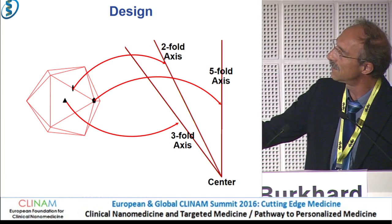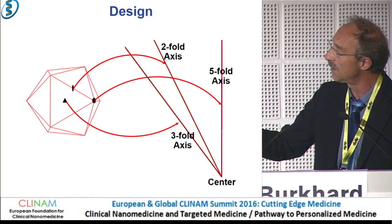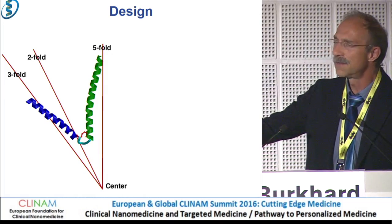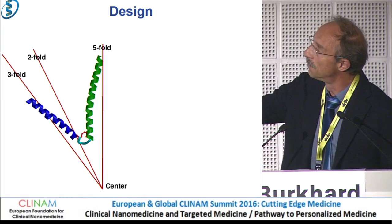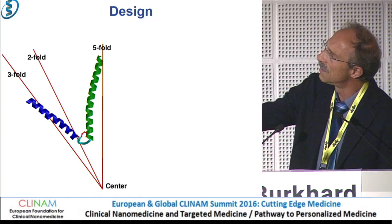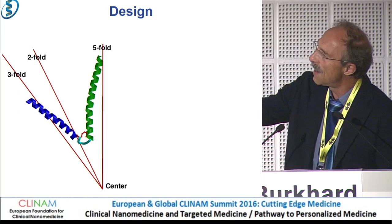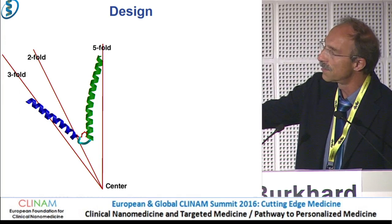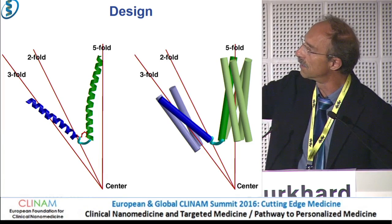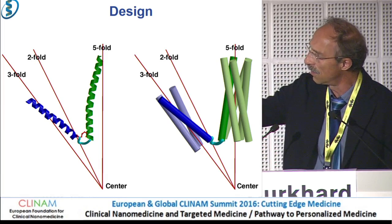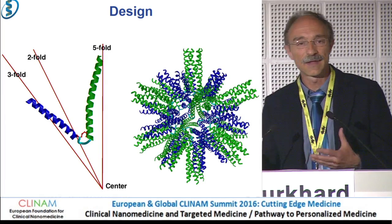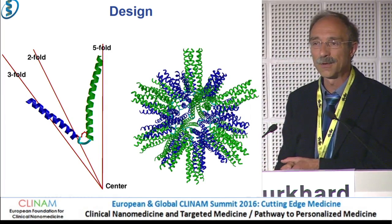These are the axes of the icosahedron — you see the three-fold, the two-fold, and the five-fold symmetry axes. If you take coiled coil proteins, like this green helix here, it forms a pentameric coiled coil. The blue helix forms the trimeric coiled coil. You align them along the three-fold and the five-fold symmetry axes and combine them into one single molecule — that's one single peptide chain. Here you have the trimeric coiled coil, here the pentameric coiled coil, aligned along the symmetry axes of the icosahedron.